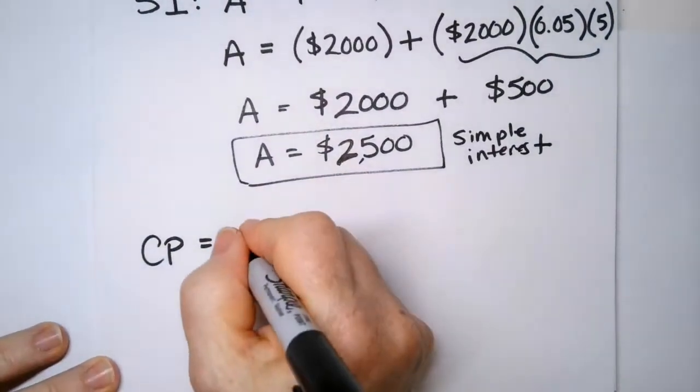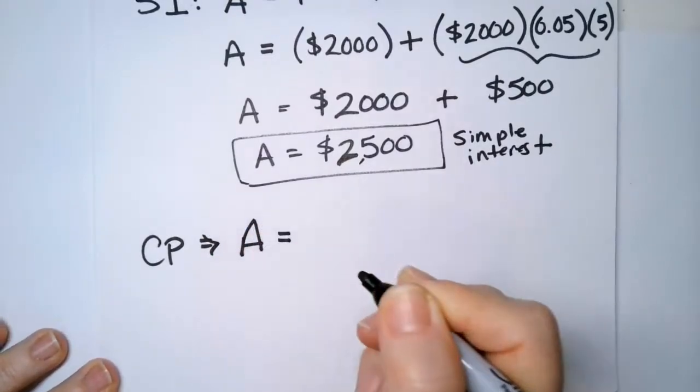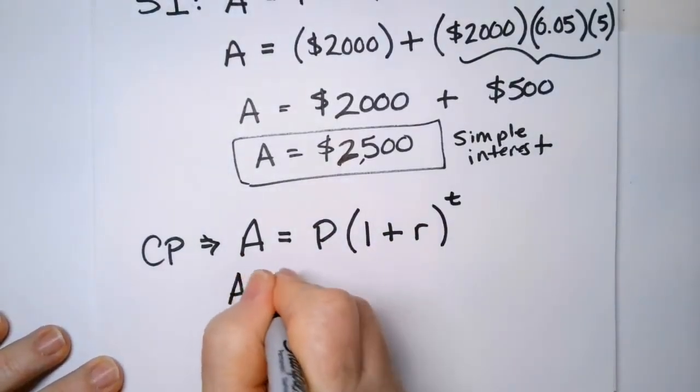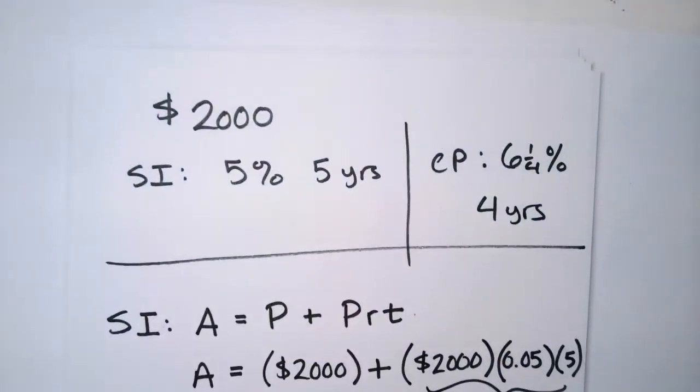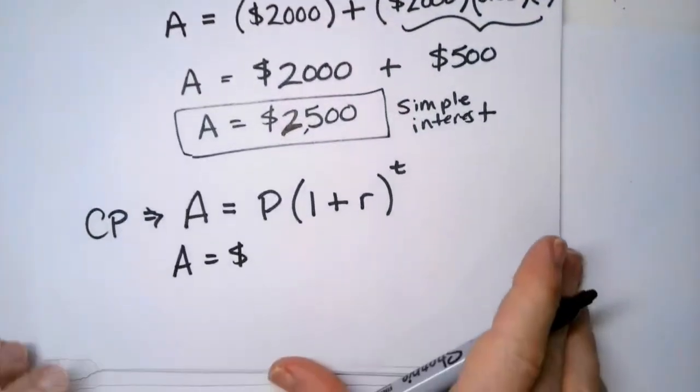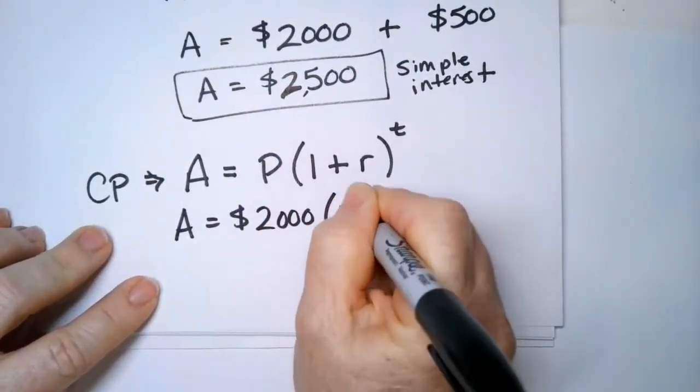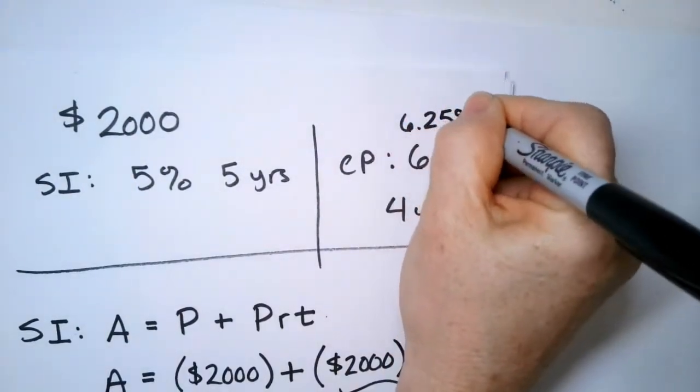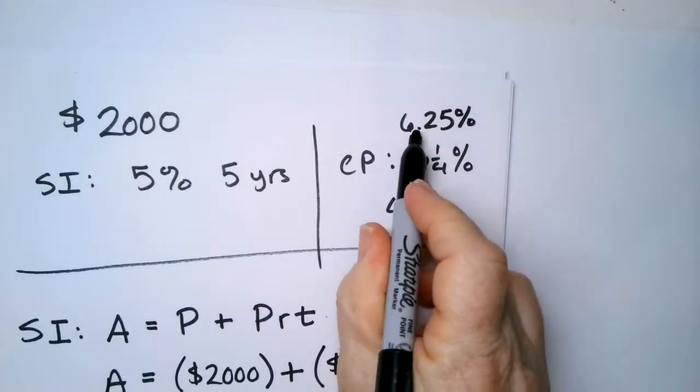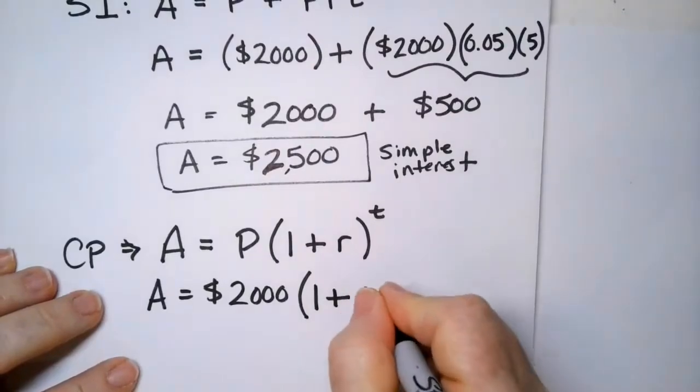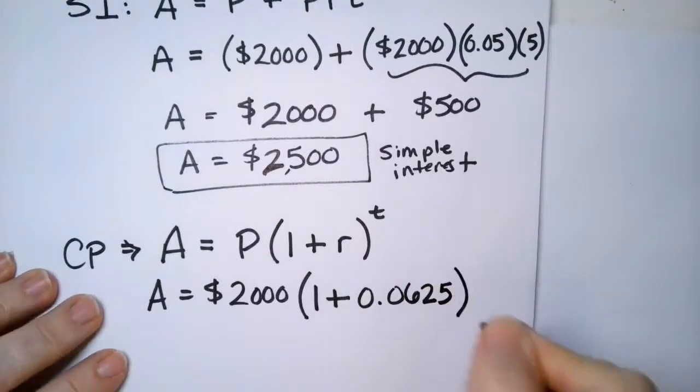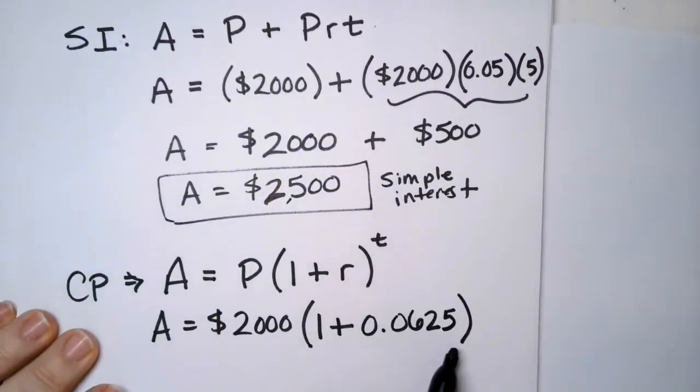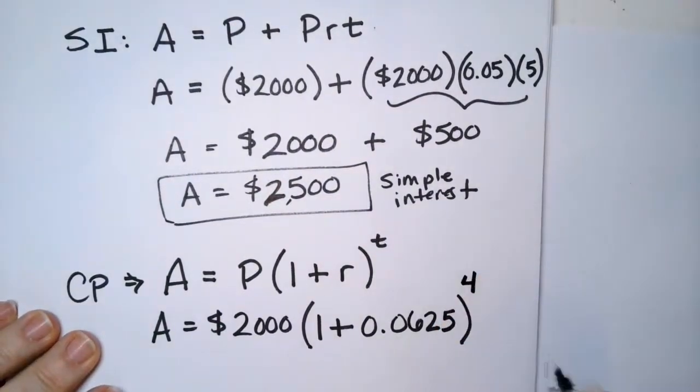So compound interest is going to be a different formula. The amount is going to be equal to how much you give them initially, and then this funny equation. So let's do this together. How much did we give them? 2,000 or 2,500? How much did we give them? Yeah, 2,000. So that goes in there. So 2,000. One plus, what's the rate? Let's go back up to the top. Six and a quarter. So that is 6.25%. To go from a percent to a number, we're going to divide by 100. So that becomes 0.0625. This is 6 and a quarter. We just put 6.25 and we just divide by 100. And that gives us our rate. And then as an exponent, we have a 4.